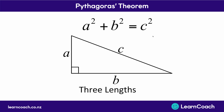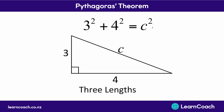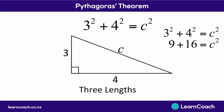Once we've labelled our sides, we can now use our formula to discover what the long length is — what is c? Say I told you that a was 3 metres long and b was 4 metres long, and I want to know how long c is. We can plug these numbers into our formula: a is 3 metres and b is 4 metres. You can just plug this into your calculator: 3 squared plus 4 squared.